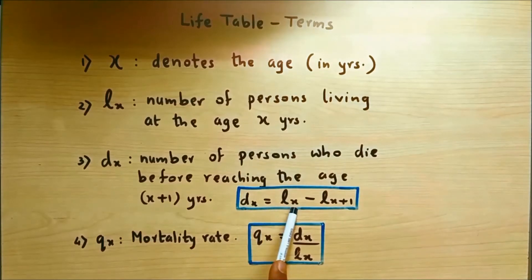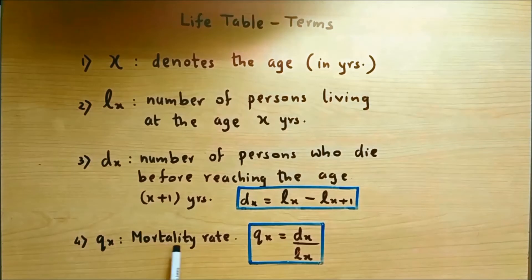Now the fourth column is QX. QX is the mortality rate, that is it is the probability a person of age X years will die. That's the mortality rate and it is given by DX upon LX. So these are the first four terms. We now move to the next set of terms.